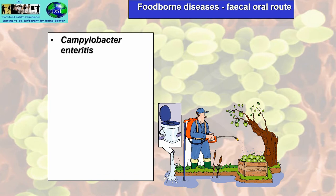Examples include Campylobacter enteritis — enteritis means inflammation of the gastrointestinal tract. Campylobacter is the biggest cause of diarrhoea in the UK. We get a lot of that on raw chickens, even on the outside packaging — it's not just on the inside of the chicken, in the cavity or on the skin, but also on the outside of the packaging. So you've got to be careful when buying chickens.